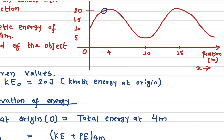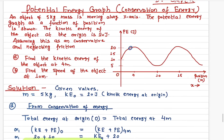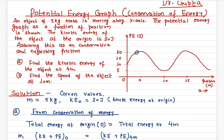I'd like you to find the speed of the object at two additional locations — I'll call them point A and point B. Without doing the math, try to get a sense of whether the speed will be greater at point A or point B, and write your answer in the comment section below. That's it for the potential energy graph. If you have any questions, write them in the comment section below, and don't forget to subscribe to the channel. Thank you very much.